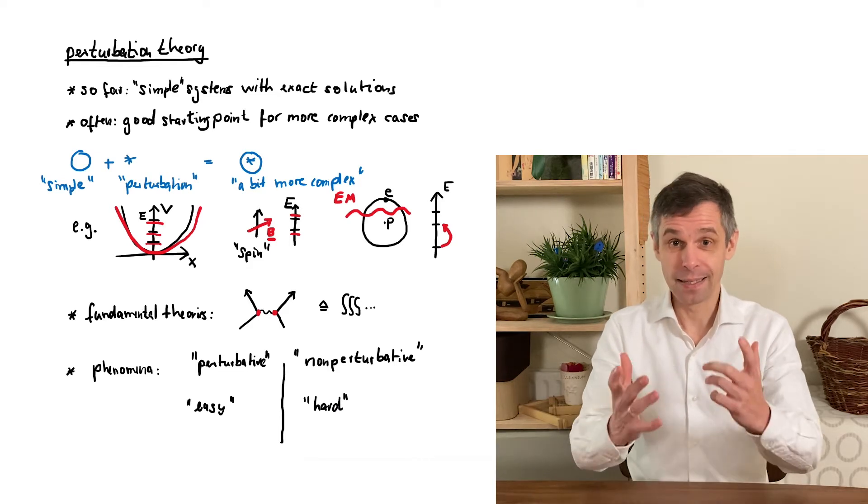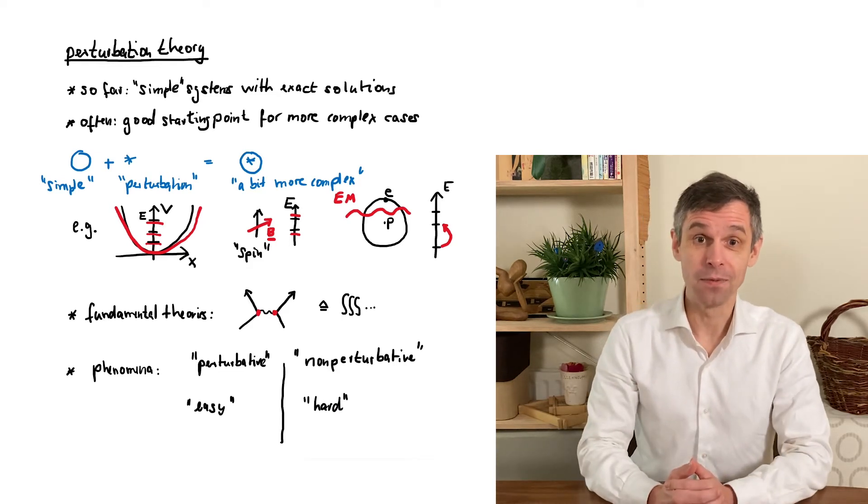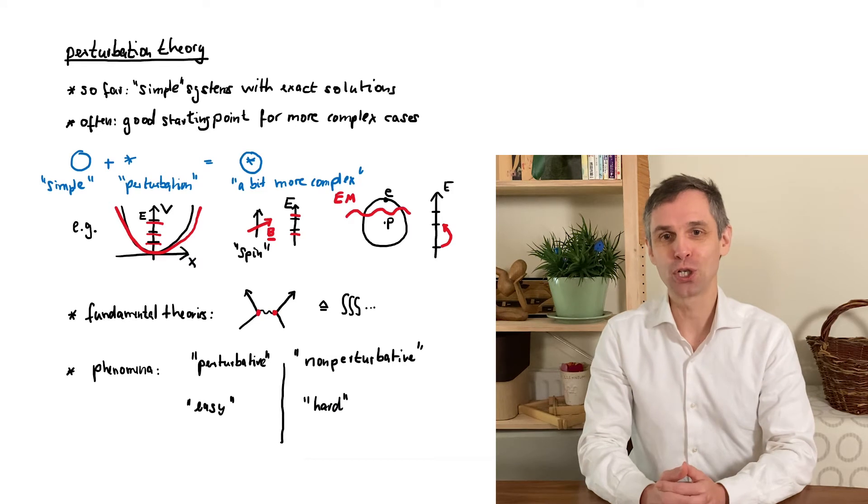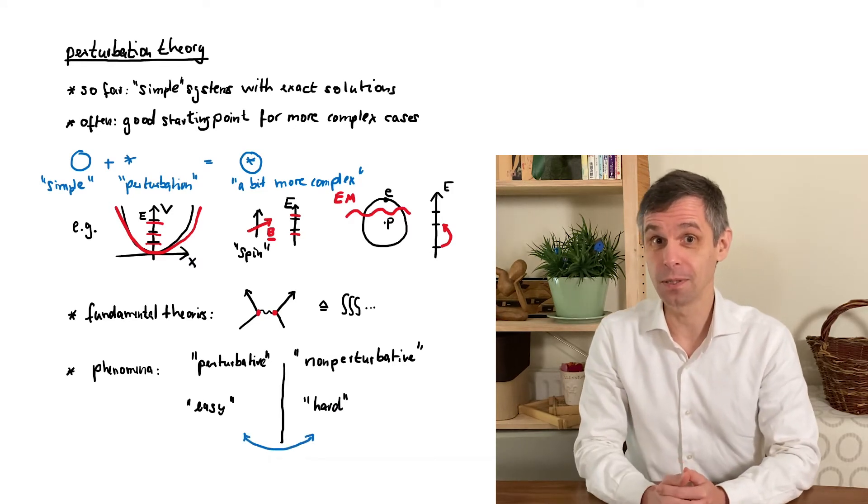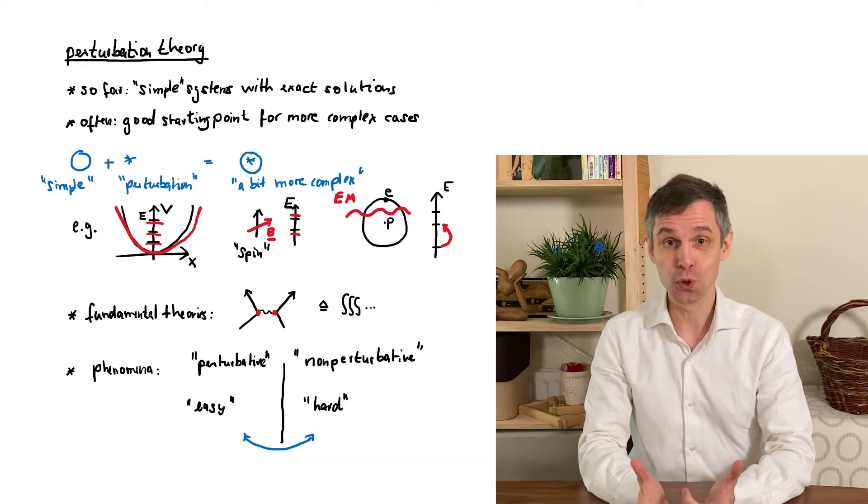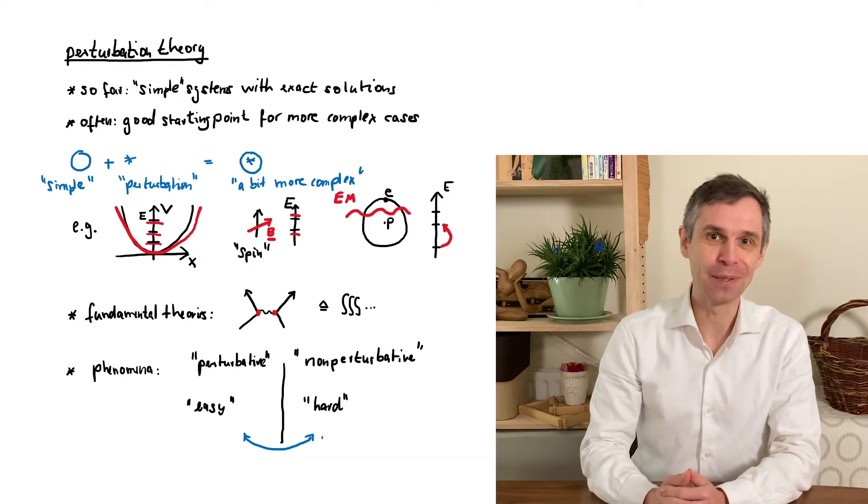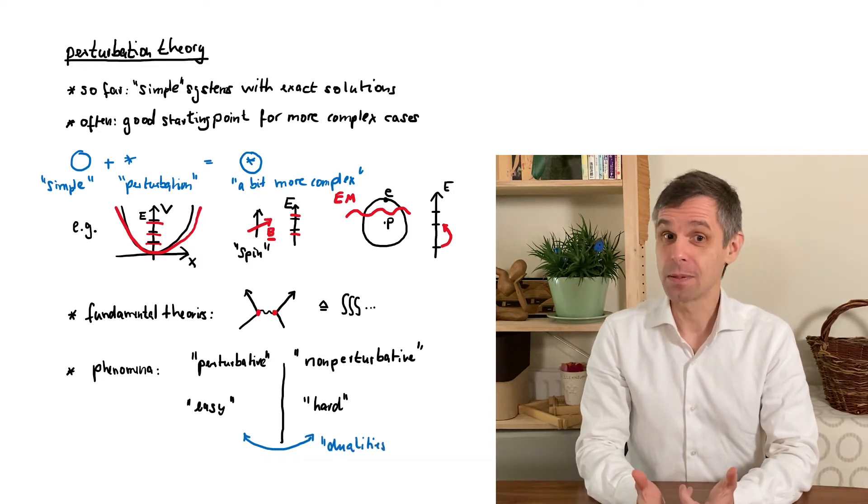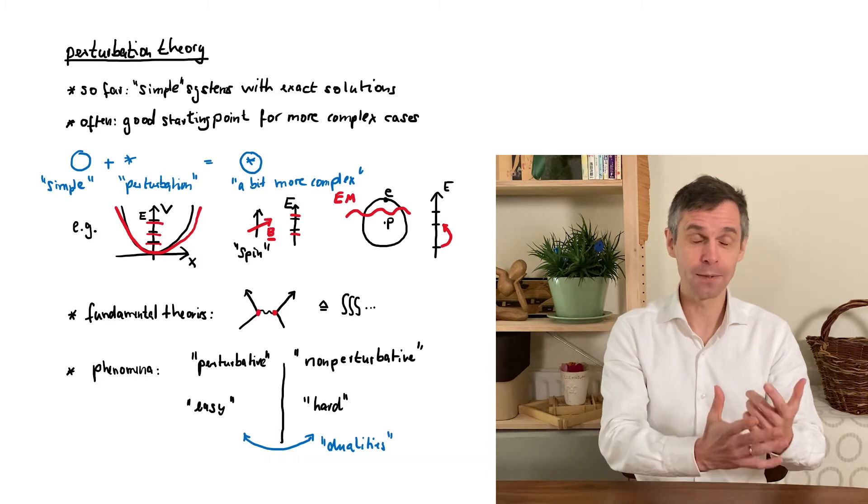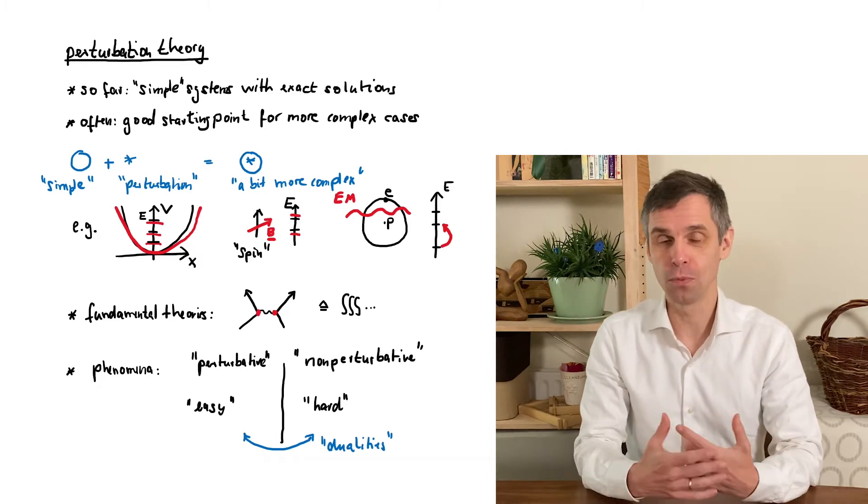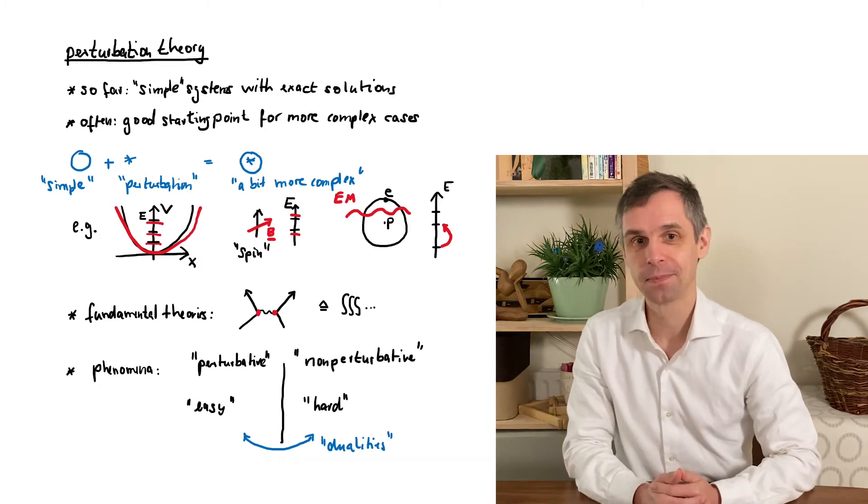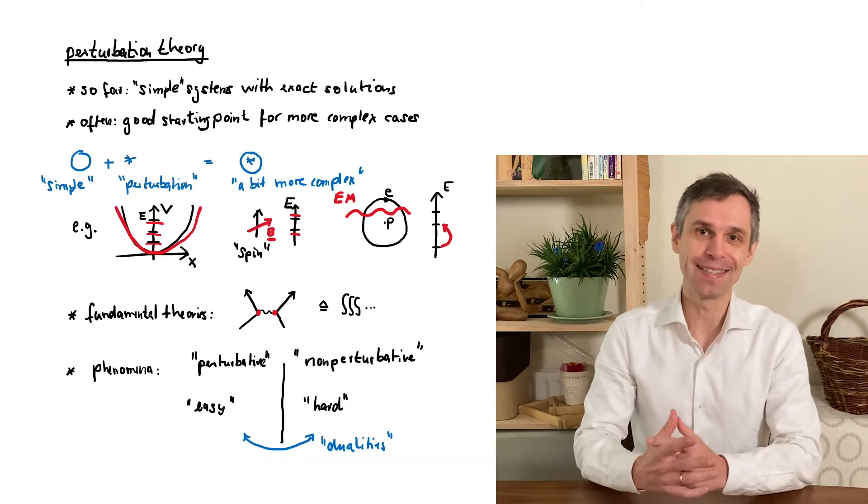On the other hand there are also some sometimes even very general ideas by which you can relate the physics of these difficult to understand non-perturbative phenomena to the physics of the simpler perturbative phenomena. This can sometimes be achieved by adopting two totally different mathematical formulations on both sides of such a relation. Such relations are generally known as dualities.